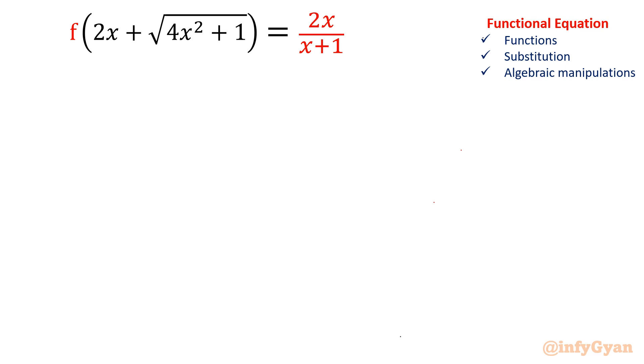Functional equation is f of 2x plus square root 4x square plus 1 equal to 2x over x plus 1. We will solve this functional equation using substitution method. We will do some algebraic manipulation.